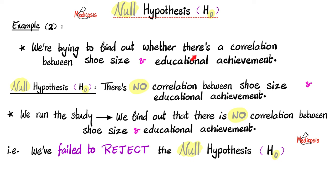Here is another example: we're trying to find out whether there is a correlation between shoe size and educational achievement in a given population. The null hypothesis will claim that there is no correlation between shoe size and educational achievement. We conduct our study and find out that there is no correlation — which means the null hypothesis was true, and we have failed to reject the null hypothesis.